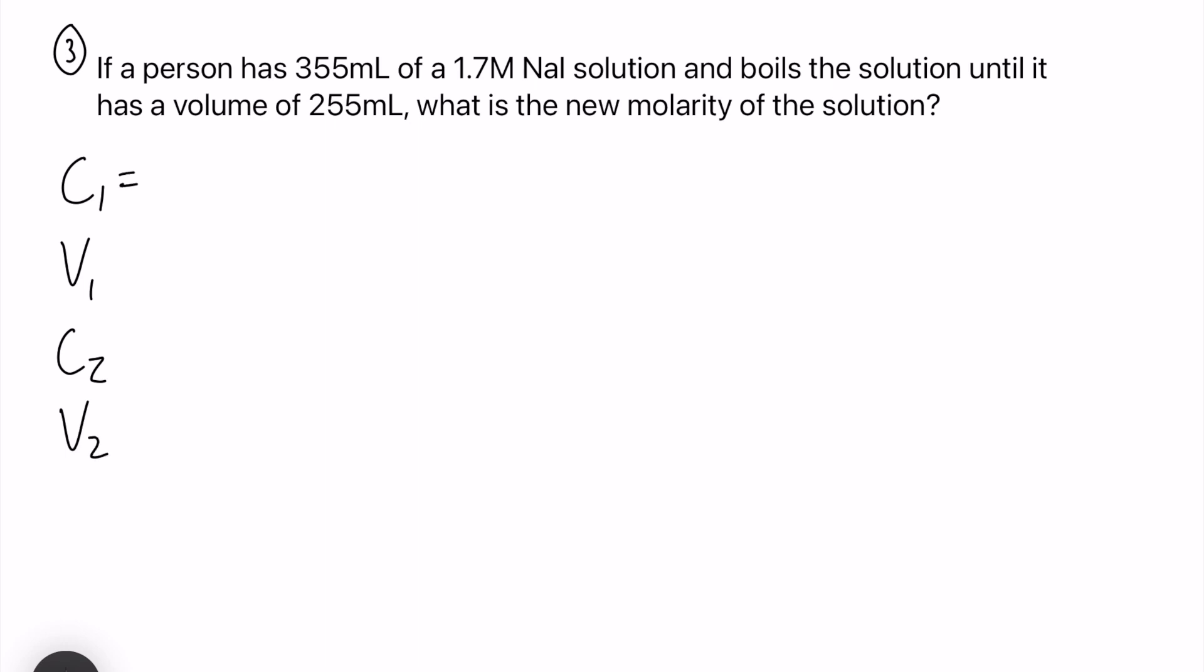So our first concentration looks like it's going to be 1.7 molar and we also have V1 in 0.355 liters. I just changed the mils to liters, and finally we have our V2 as well which is 0.255 liters. So it looks like our volume does go down because the solution is boiled. What we're going to assume is everything that was boiled is just water and we have the exact same amount of our sodium iodide in both solutions.